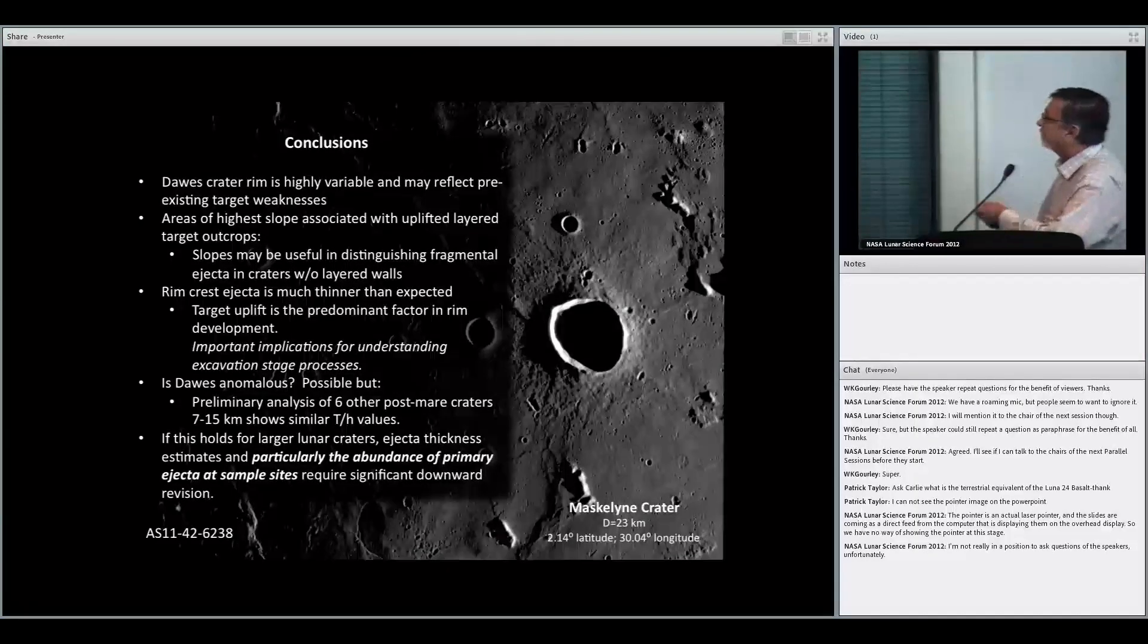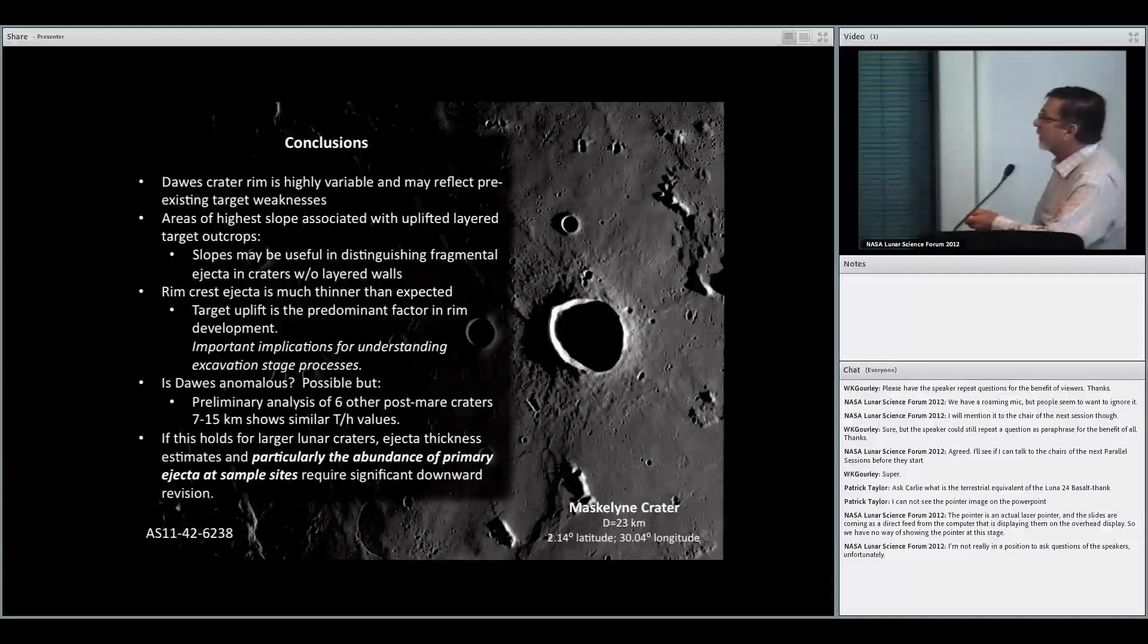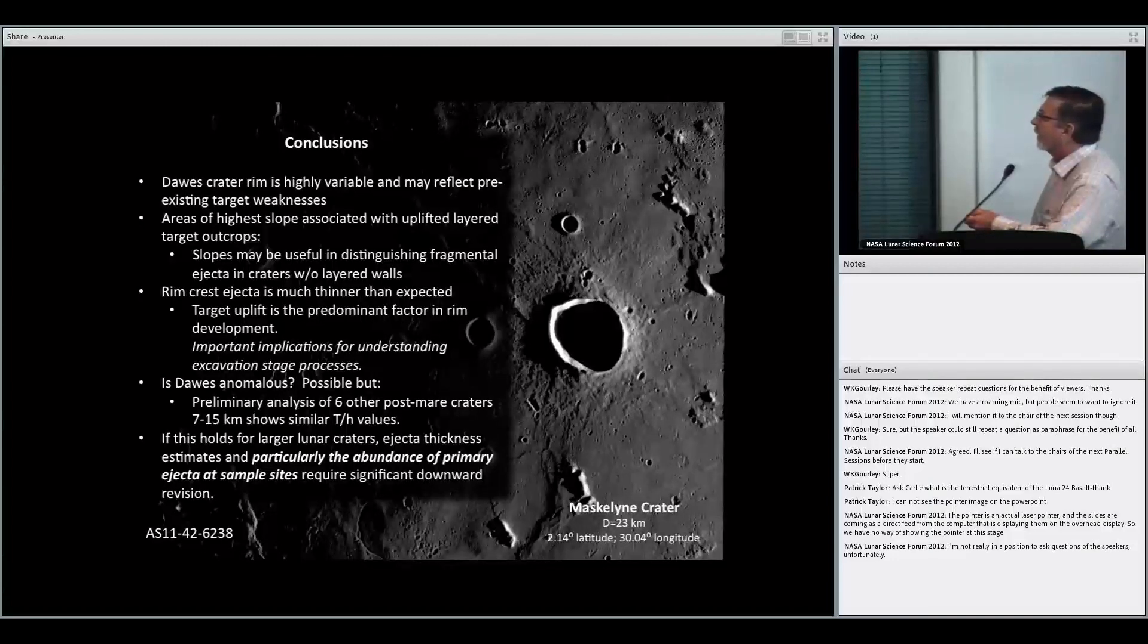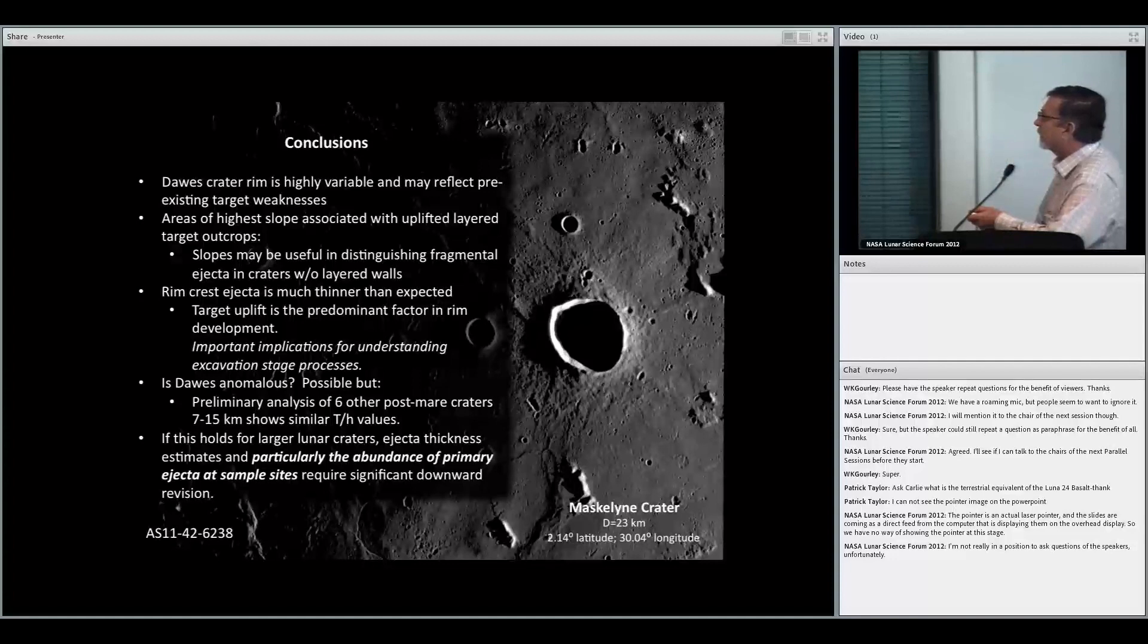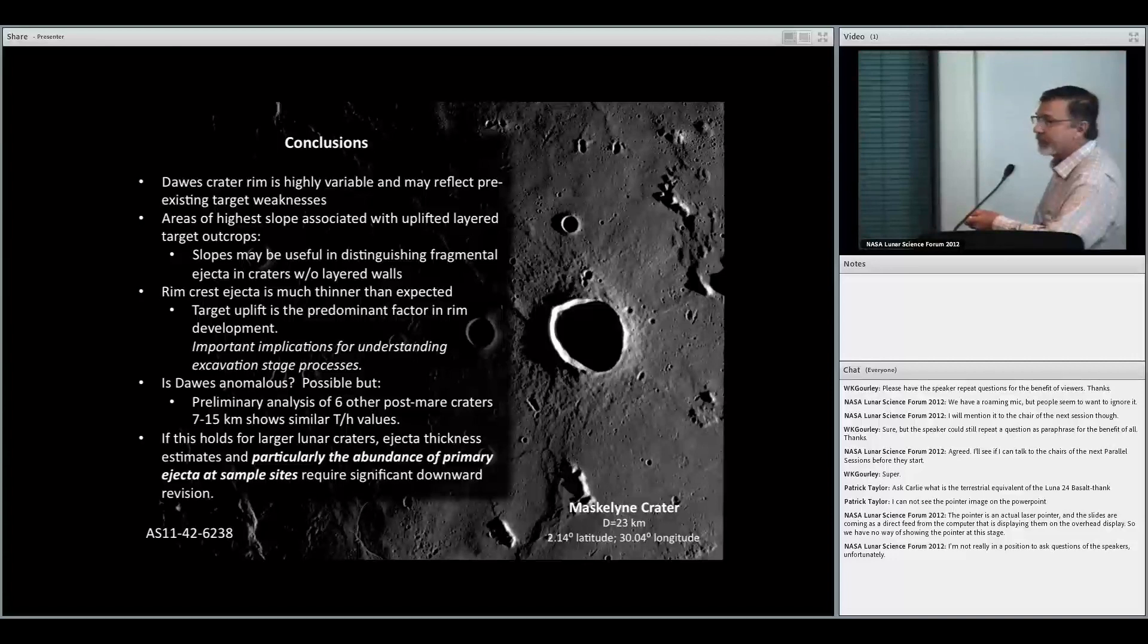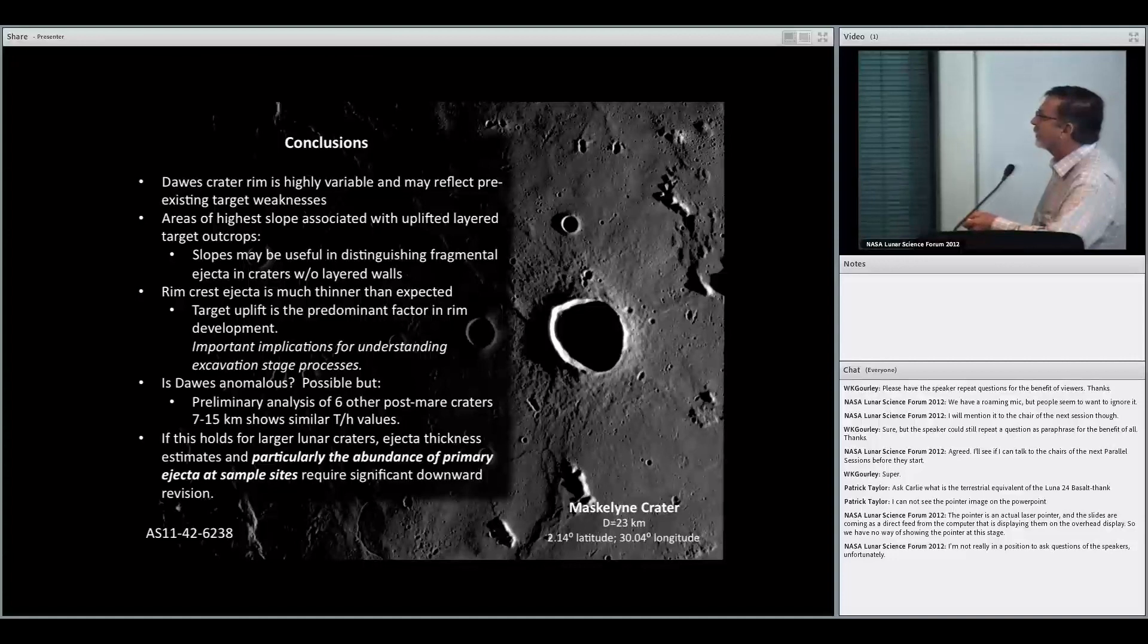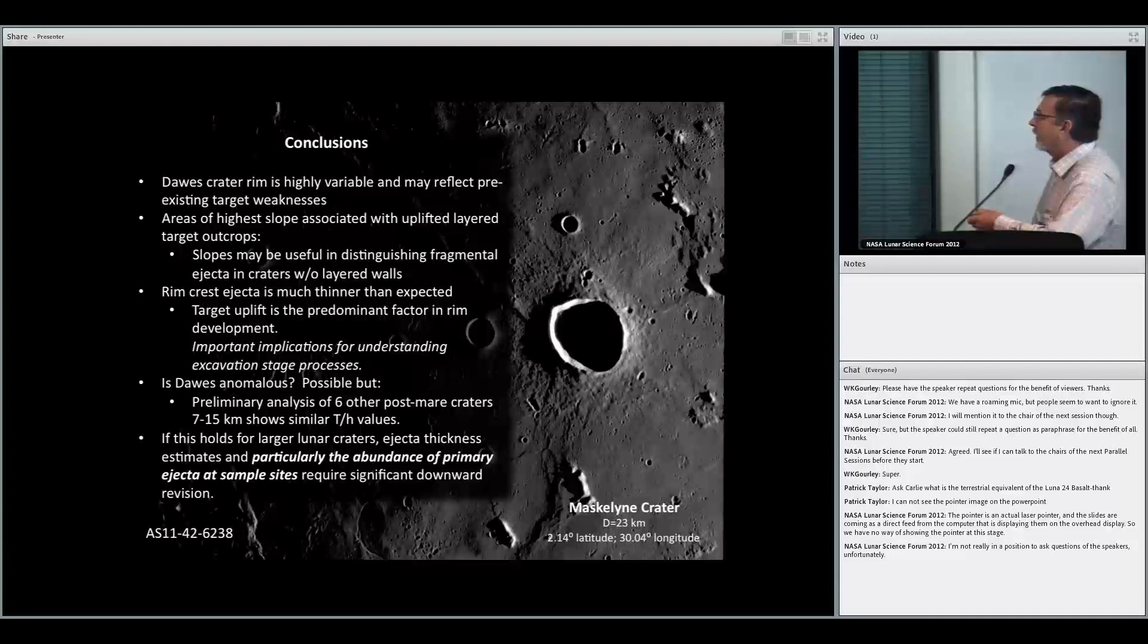So, what are the conclusions? Well, Dawes rim is certainly very variable, and it's more likely to be the effects of pre-existing target structure than oblique impact. In fact, the areas of highest regional slope are associated with uplifted target rocks. The slopes are measured over 300 meters or so. And slope and other characteristics discernible in these new NAC images may be useful in distinguishing between the fragmental ejecta and the uplifted target in craters that do not have layered walls, such as those craters in highland areas.